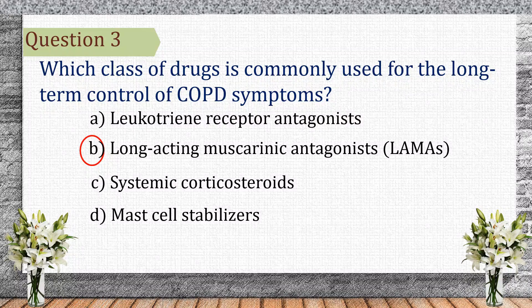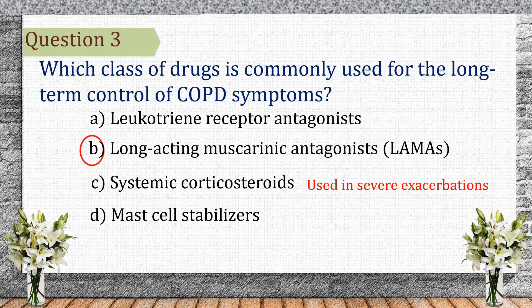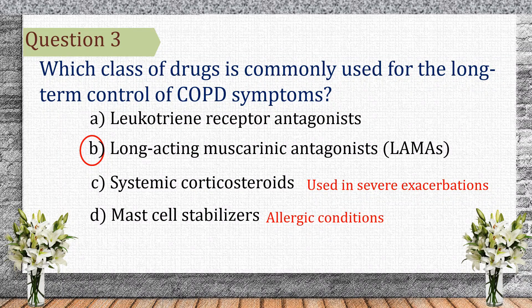Let's see the other options. Leukotriene receptor antagonists are more effective for asthma, not COPD. Systemic corticosteroids are used in severe exacerbations, not long-term management. Mast cell stabilizers are used for allergic conditions, not COPD.